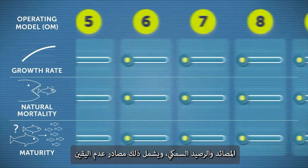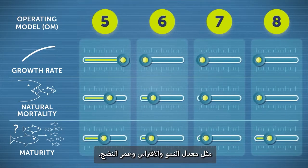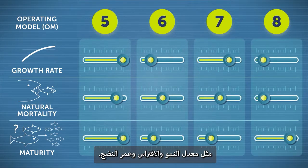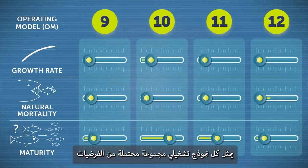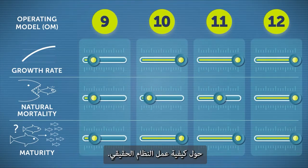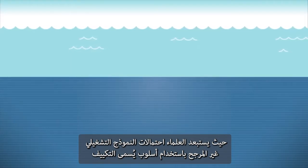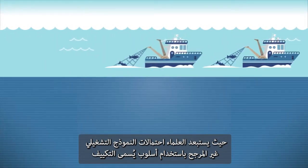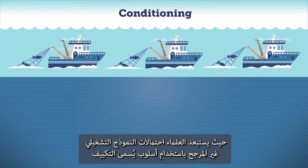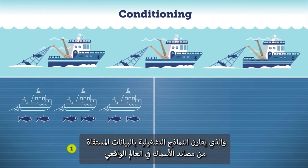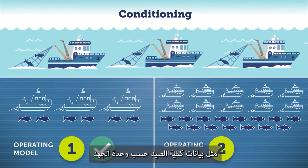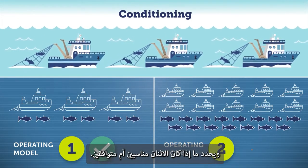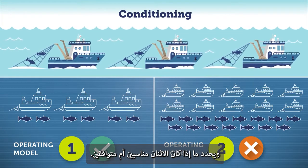MSE starts with operating models that simulate the conditions of the fishery and stock, including uncertainties such as growth rate, predation and maturation age. Each operating model represents a potential combination of hypotheses about how the real system functions. Scientists eliminate unlikely operating model scenarios using a technique called conditioning, which compares the operating models to available real-world data from the fishery, such as catch-per-unit effort data, and determines whether the two fit or are compatible.